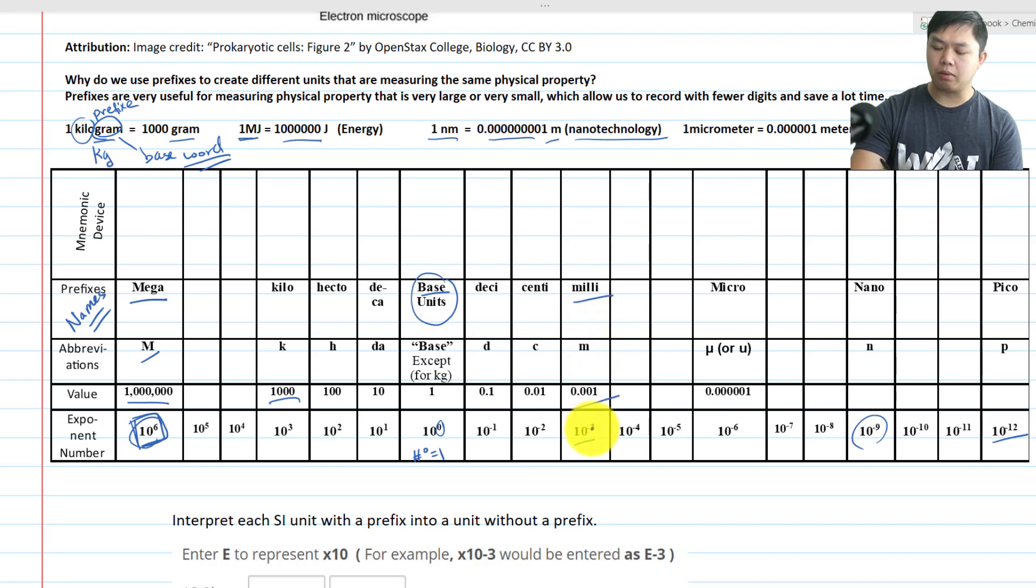Milli, M, 10 to the negative 3. Micro, we have this symbol for micro. It looks like the letter U, but it's 10 to the negative 6. Nano, N, 10 to the negative 9. Pico, P, 10 to the negative 12. So those are the prefixes that you will see in your science class.